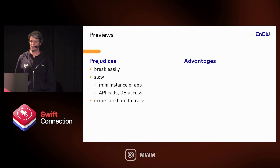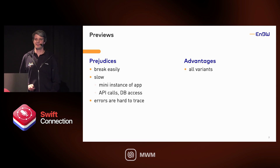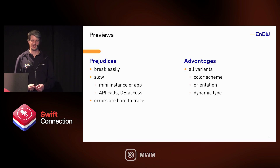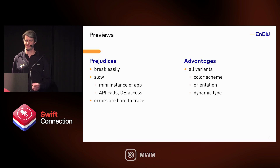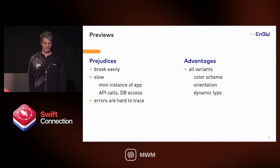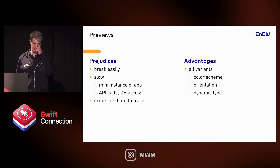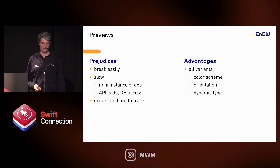Previews give a lot of advantages. You can see the view in all variants — like different color schemes, dark and light mode, orientation, and even more importantly, in the dynamic types the system offers. I think there are 12 different variants of dynamic types — all the text sizes. All three of these variants you can directly select in Xcode since last year, without needing to change anything in your preview code.